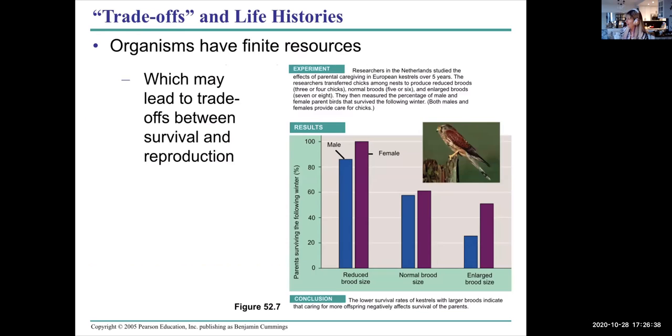There are trade-offs to when to reproduce and how many offspring to have. There's a trade-off between your own survival and having offspring and their survival, because organisms have finite resources. There's just a certain number of resources that individuals have. This shows survival rates of kestrels, that's a kind of bird, and whether or not they have a very large brood size or number of offspring, a normal one, or a reduced one. These are the males in blue and the females in pink.